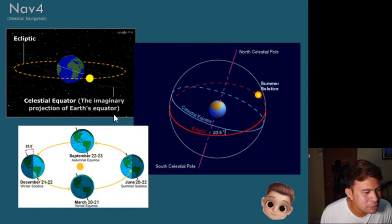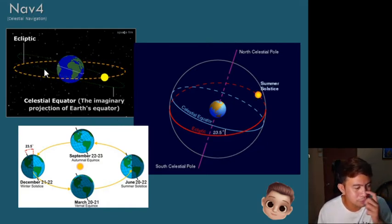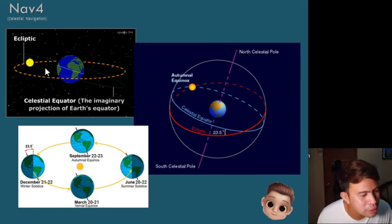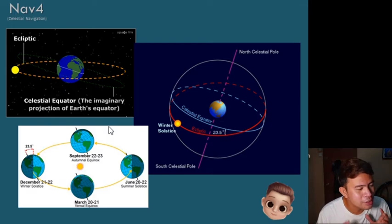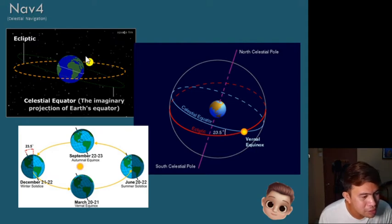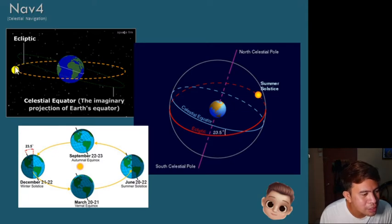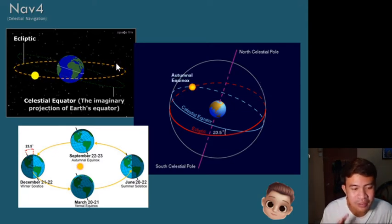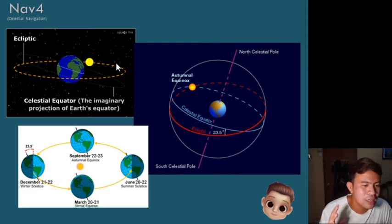The celestial equator is the imaginary projection of our Earth's equator. What is being shown here is the ecliptic — the path along which the sun travels through the celestial sphere.